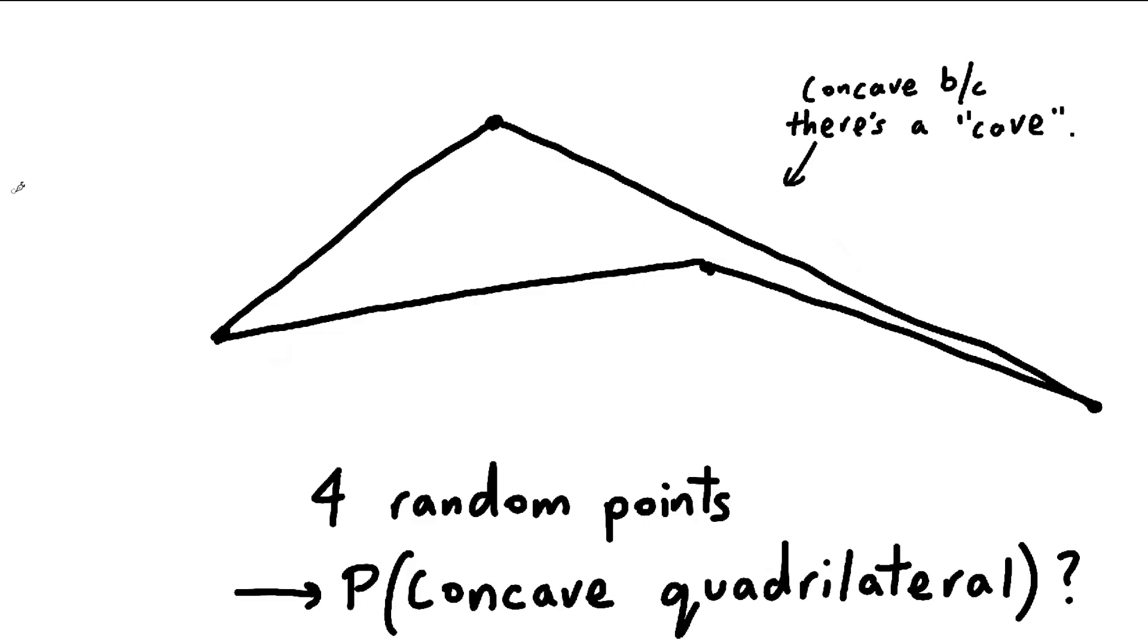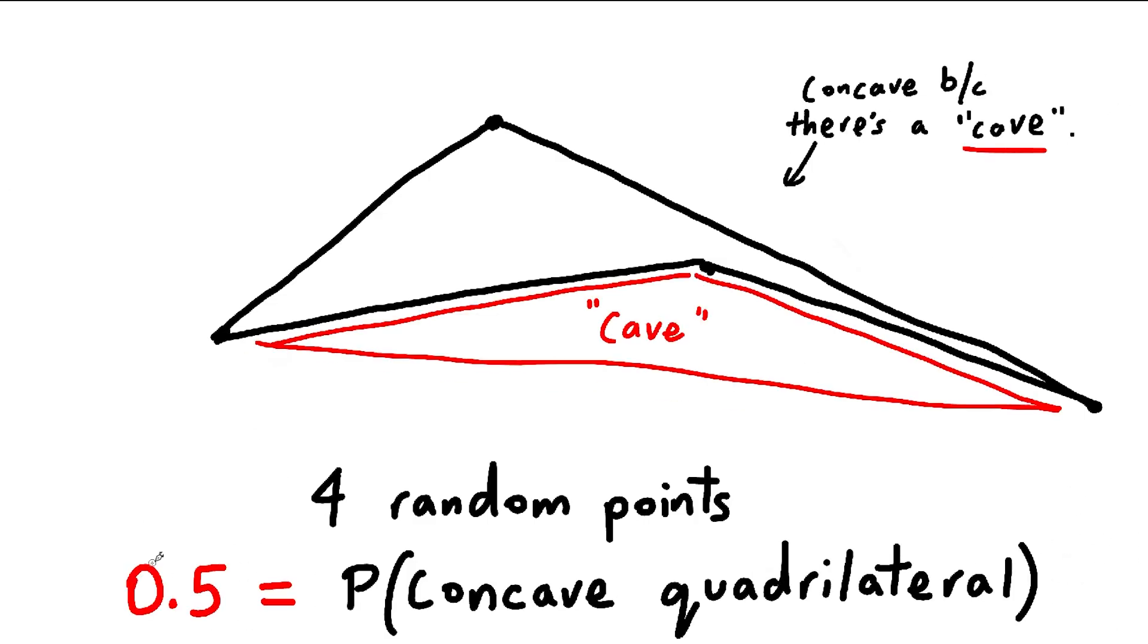If you pick four random points in the plane, what is the probability that they connect up into a concave quadrilateral? The answer is 50%. No, no, it's not.